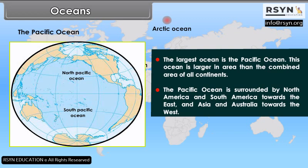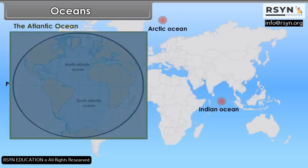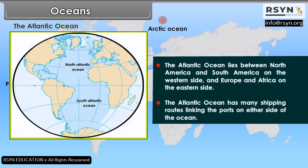The Atlantic Ocean lies between North America and South America on the western side and Europe and Africa on the eastern side. The Atlantic Ocean has many shipping routes linking the ports on either side of the ocean.